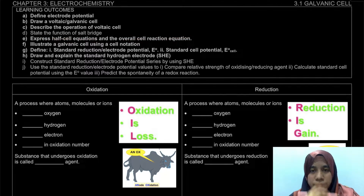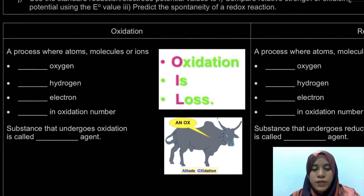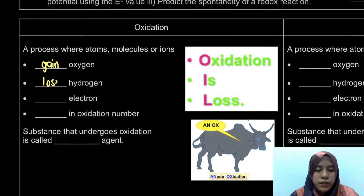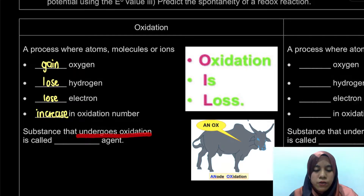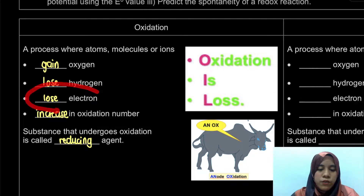Before we look further into the galvanic cell, we will do a revision on what is meant by oxidation and reduction, which you will also have learned during secondary school. Oxidation is a process where atoms, molecules, or ions will gain oxygen or lose hydrogen. It is also a process where species will lose electrons and have an increase in oxidation number. The substance that undergoes oxidation is called a reducing agent.